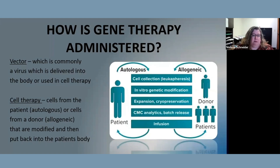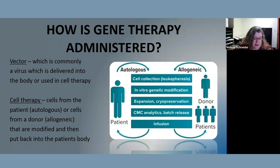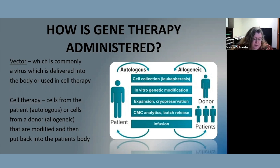Another commonly used method is a vector. As discussed, manipulation of RNA or DNA can be done by using a vector, which can be delivered directly into the body — commonly a virus. Or the vector can be used in cell therapy. Cell therapy uses cells from the patient, which would be autologous use, or cells from a donor, which would be allogeneic use.